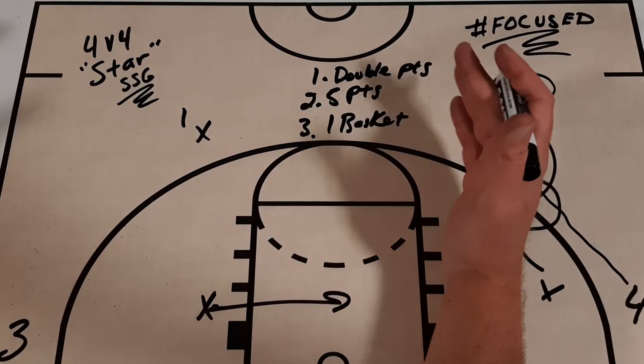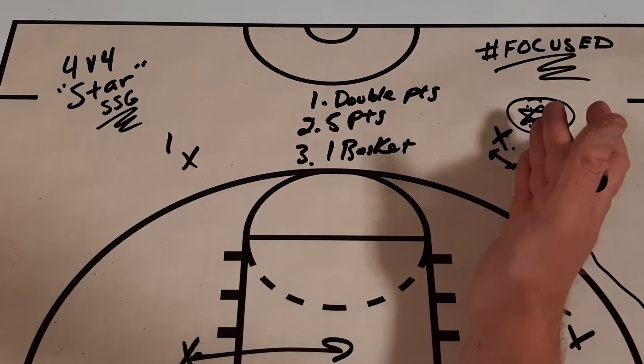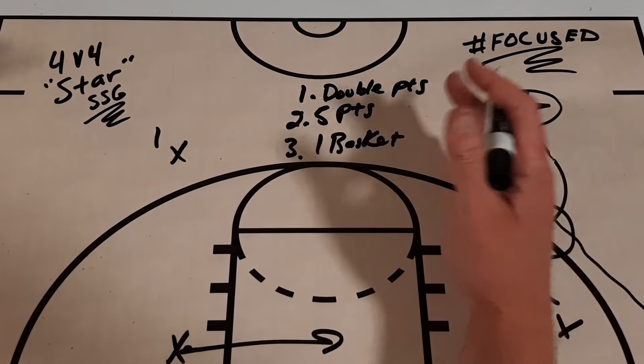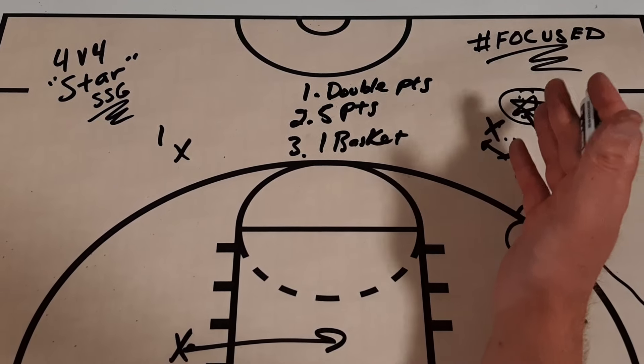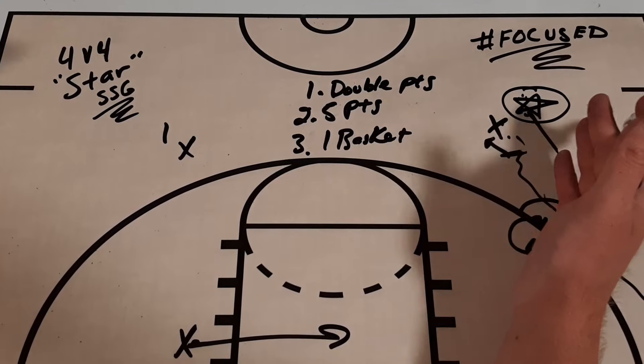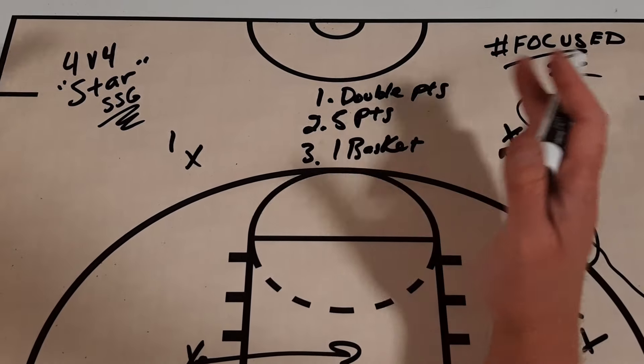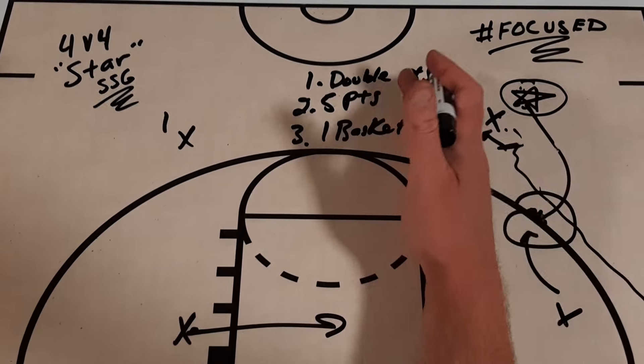I think it helps on both ends, because sometimes you have a player teams might go box-in-one on, and it teaches your players how to screen for them, and how that player needs to move. We've had teams that have gone box-in-one on us, and we've also played against teams that had really good star players. So this helped us on both ends of the spectrum.